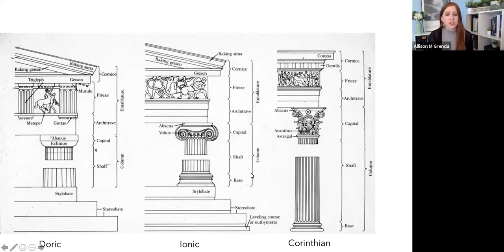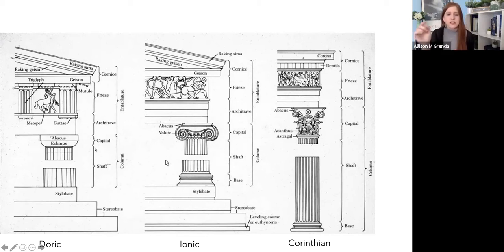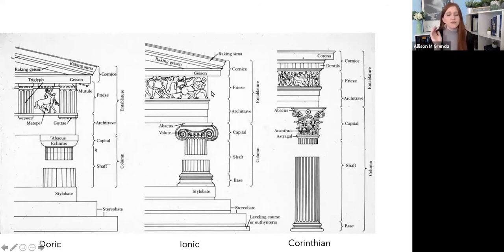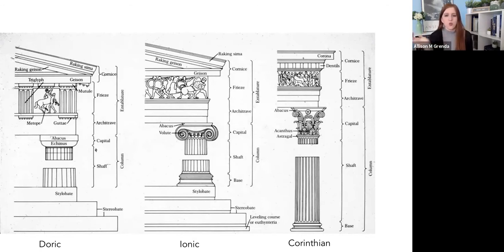In the Ionic order, we start to see changes. We still have the stylobate and stereobate, but we start to see a base on the columns — they don't just rise right up. We have this liminal space with the base, and then we see fluting on the columns and decoration on the capital: the Ionic volutes, those spiral decorative features. The frieze does not have triglyphs and metopes — it's going to be a continuous frieze, one long image that flows across the entire facade with no separation.